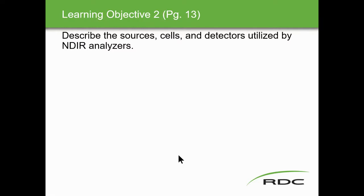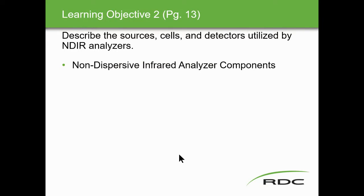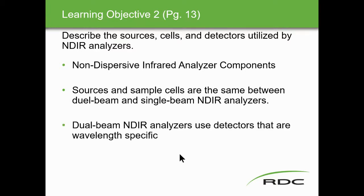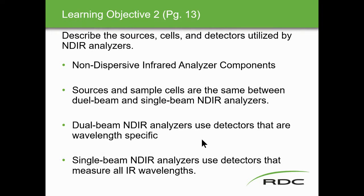Learning objective two: describe the sources, cells, and detectors utilized by NDIR analyzers. Non-dispersed infrared analyzer components — sources and sample cells — are the same between dual beam and single beam NDIR analyzers. Dual beam NDIR analyzers use detectors that are wavelength specific. Single beam non-dispersed IR analyzers use detectors that measure all IR wavelengths.